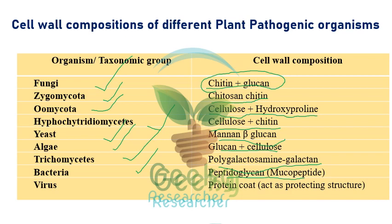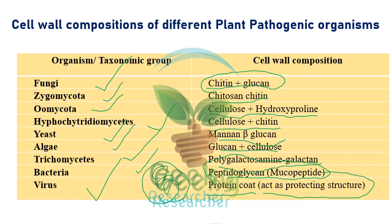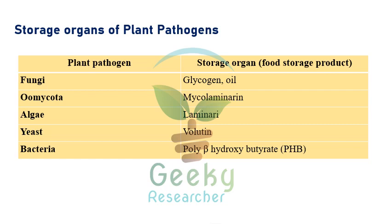Bacterial cell wall is composed of peptidoglycan, otherwise called muco peptide — very important. The composition of muco peptide varies between gram positive and gram negative bacteria. Virus does not contain a cell wall; it contains a protein coat which acts as a protecting structure. Inside the protein coat is nucleic acid, which is the infectious material of plant viruses.